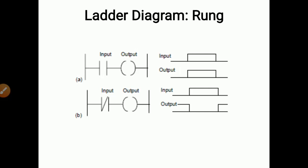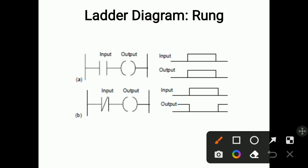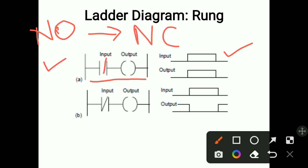Here we have shown one rung — the ladder diagram rung. The first rung consists of one input and one output. The contact used is a normally open (NO) contact. Right now the output device is off because the contact is open. When we give some input supply to this contact, the normally open contact will get converted to a normally closed contact — it will close and the output will get generated.